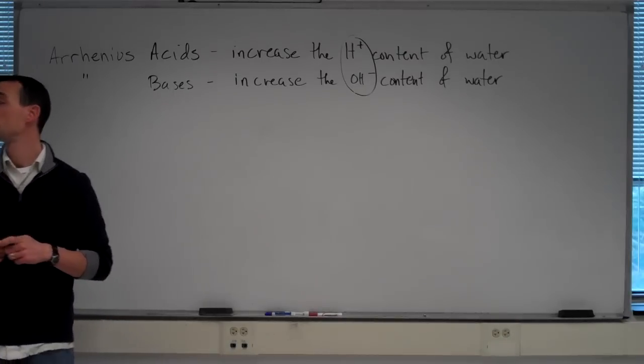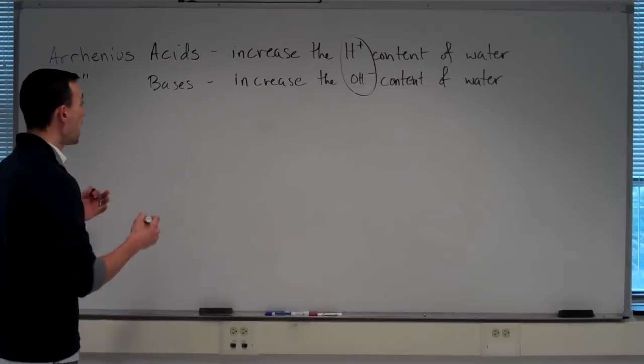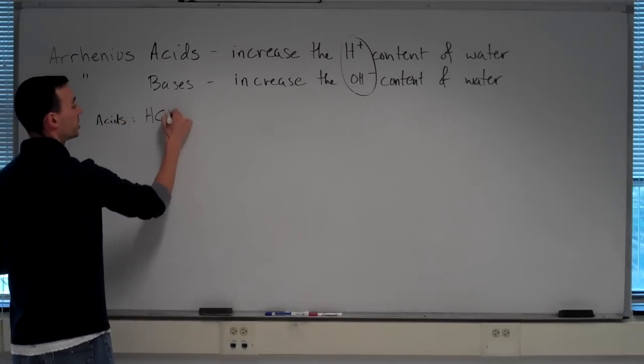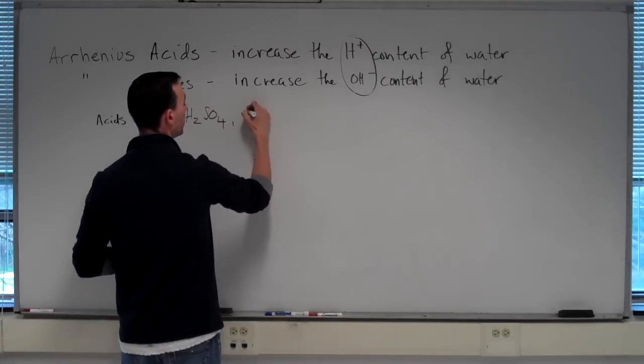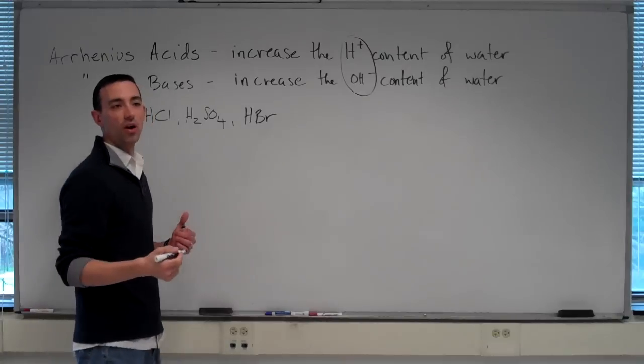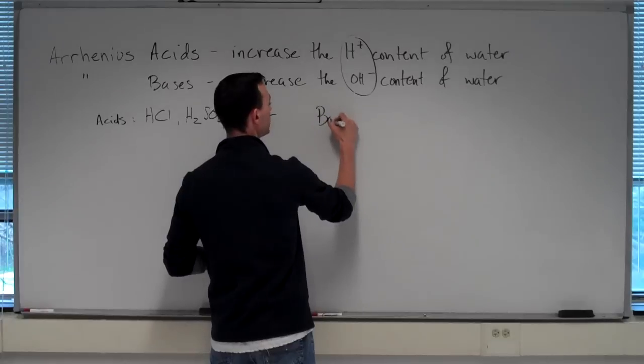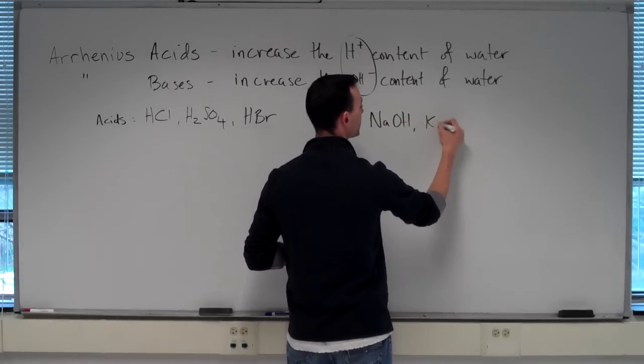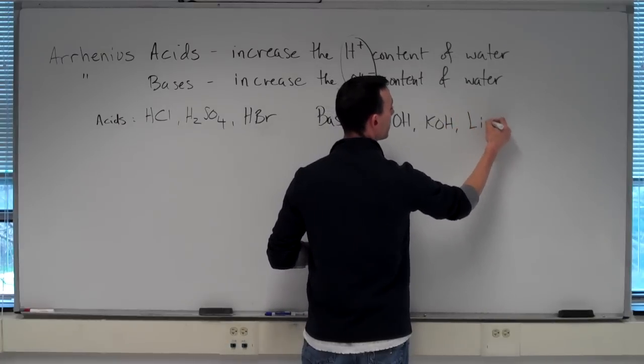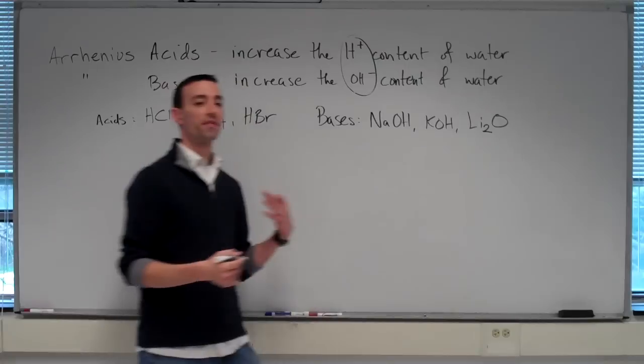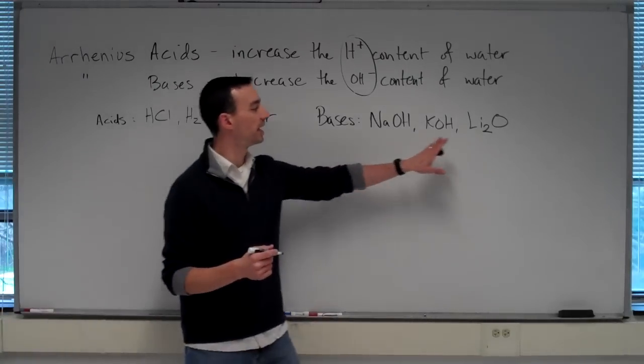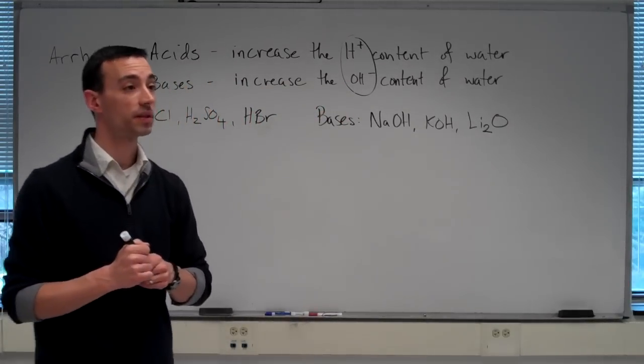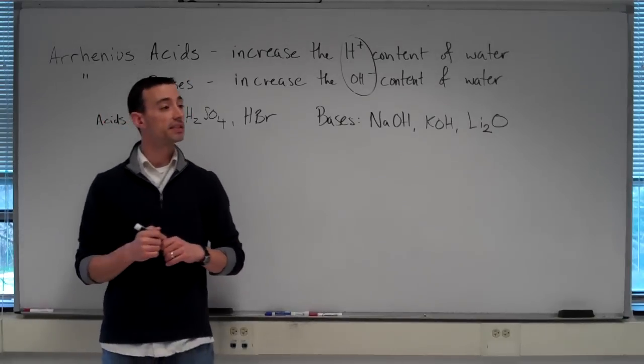Acids were, under this definition, acids were things like HCl, H2SO4, HBr, some things that we are familiar with. But bases were only sodium hydroxide, for example, potassium hydroxide, lithium oxide, Li2O. There was a very small group of hydroxide and oxide compounds that were capable of increasing the OH content in water. So that was our original definitions of acids and bases.